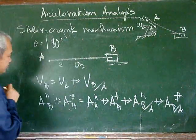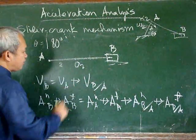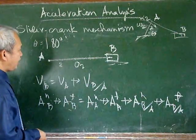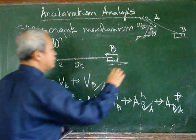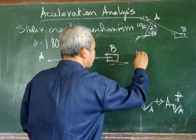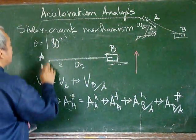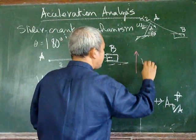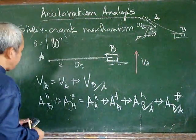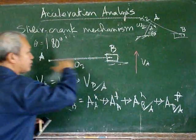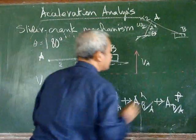The velocity of B is equal to the velocity of A plus the relative velocity of B with respect to A, and we can easily draw the velocity polygon. The velocity of A is given by that vector as it moves upward — that is the velocity of A. The velocity of B now has to be along the horizontal, and we can draw that along the horizontal.